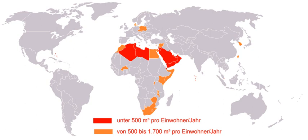Provision includes identification, access, preparation for use and distribution. Uses include direct human consumption, agriculture, industry and ecosystem protection. Policy must set the rules for how water is allocated to the different uses.